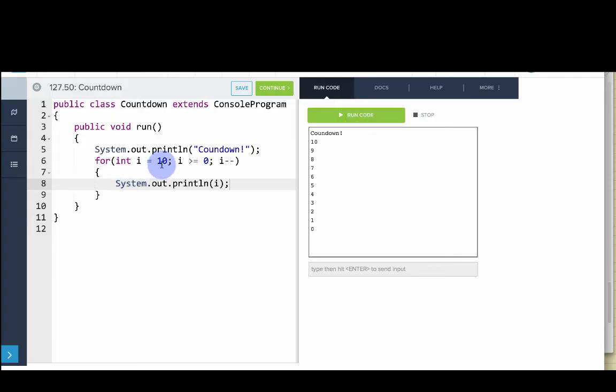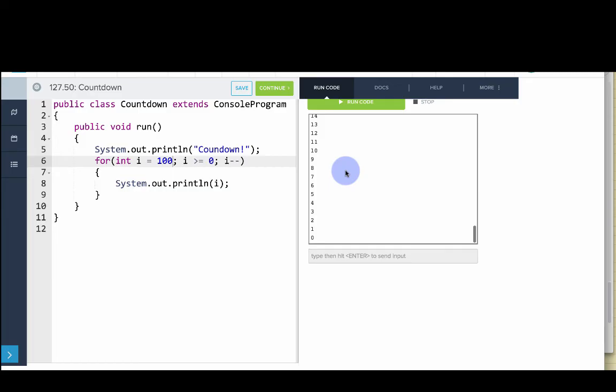So if I change i starting from 10 to 100, what do you think it's going to do? So let's find out, we'll run the code and we'll see that instead it counts down from 100 all the way down to zero.